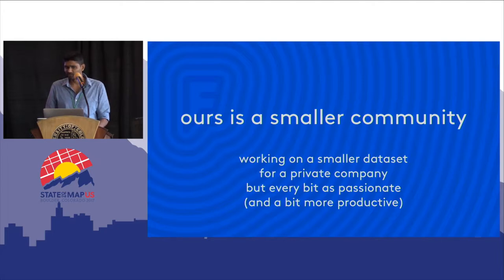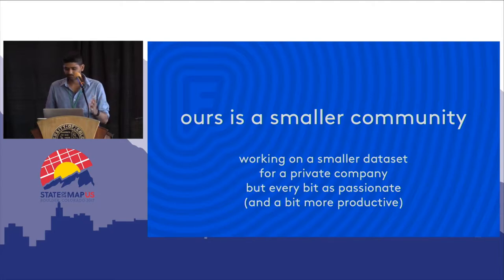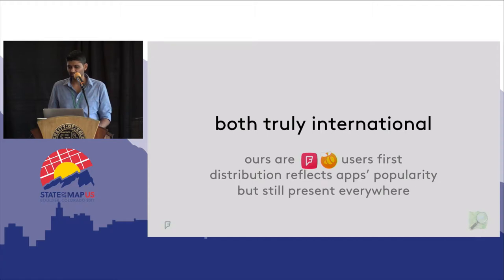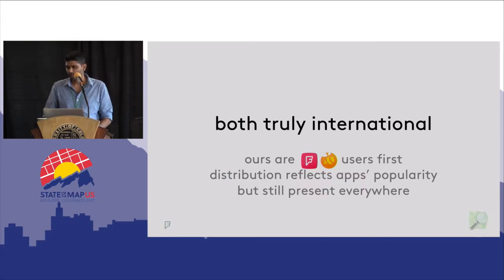We are undoubtedly a smaller community working on a smaller dataset than OSM, but I think we're every bit as passionate. If you do the math in terms of edits processed per editor, we are actually a tiny bit more productive per editor. Both of these are truly international communities that spread across the world. Foursquare super users are first and foremost users of our apps — passionate users of Foursquare CityGuide and Swarm — so their geographic distribution somewhat naturally reflects the popularity of our apps.